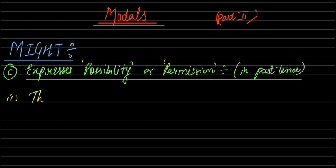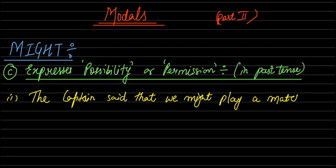The captain said that we might play a match. We can play a match. What is the captain saying? The captain said that we might play a match. It was in the past. Second sentence. What is the captain saying? First of all, it is showing permission.